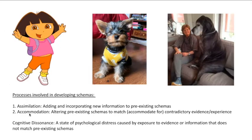Assimilation and accommodation are the two processes involved in developing and maintaining schemas. Sometimes we need to engage in these processes to make our schemas as accurate as possible. When one has a specific schema about something and they encounter evidence that is drastically different — like seeing a Great Dane and being told it's a dog despite being so different from a Yorkie — this can cause something we refer to as cognitive dissonance. Cognitive dissonance is a psychological state of distress caused by one's exposure to evidence or information that does not match their pre-existing schemas.